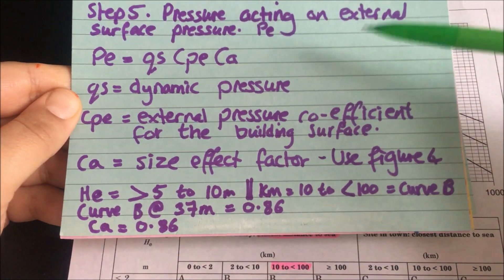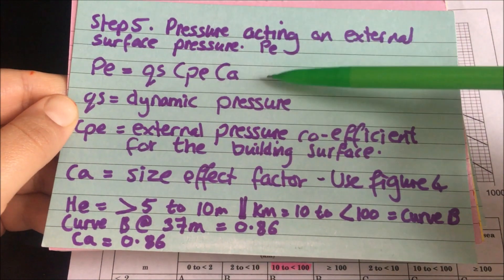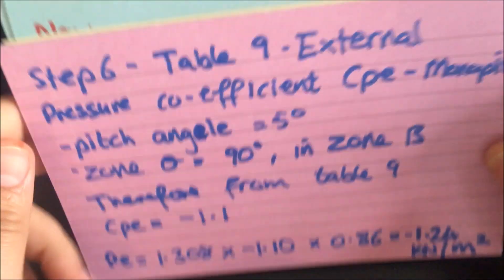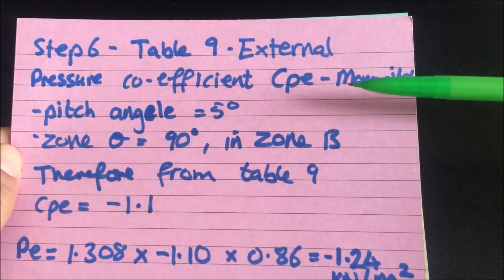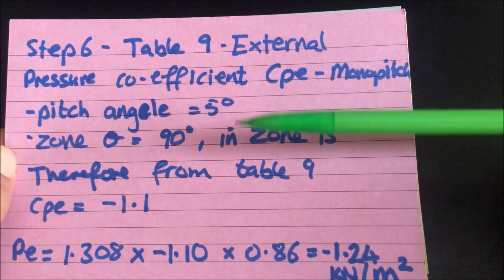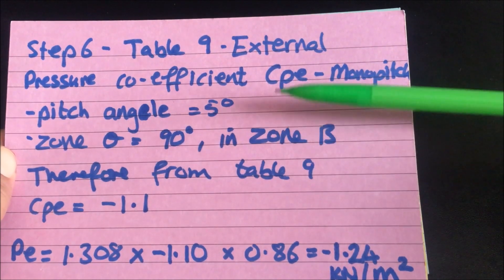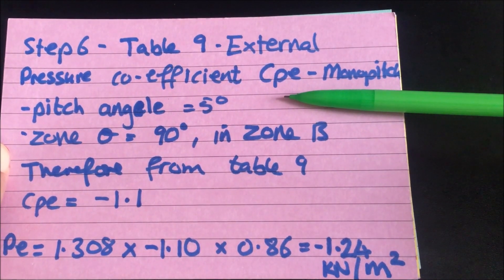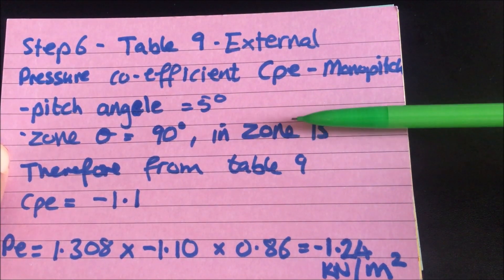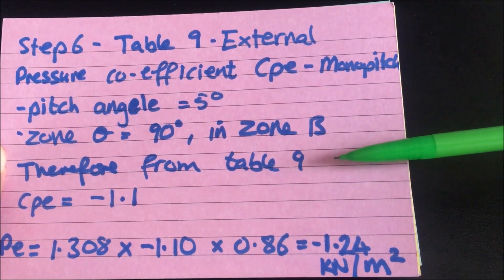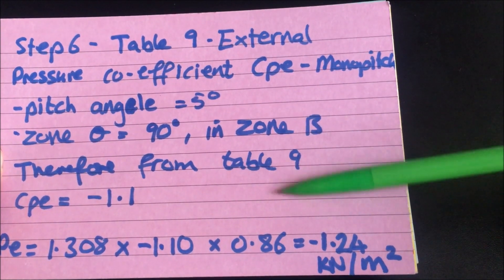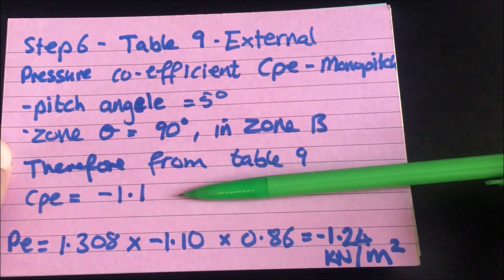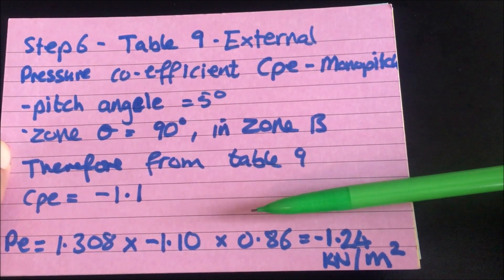The next thing to work out is the external pressure coefficient CPE, which leads us to step six. To work out CPE we need to look at table 9. The pitch angle is five degrees, the wind is applied at 90 degrees, and the building is split into zones A, B, and C. We're looking at zone B. Therefore, from table 9, we determine that CPE equals negative 1.1.